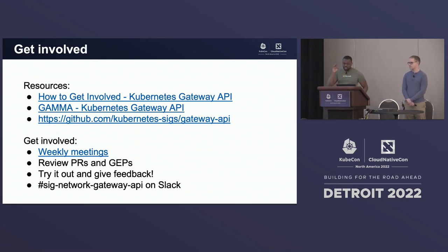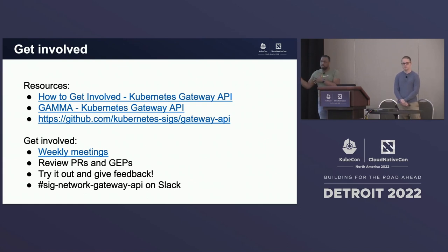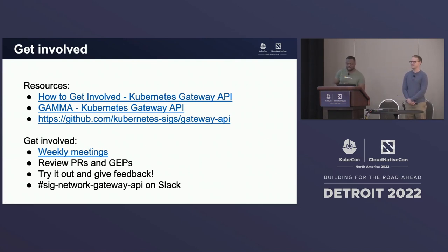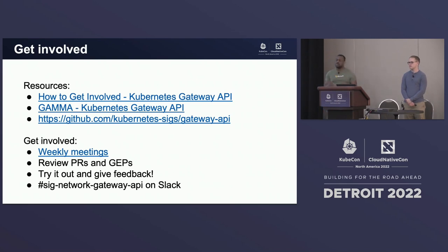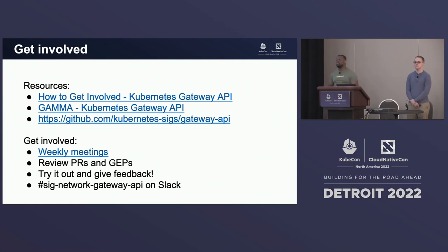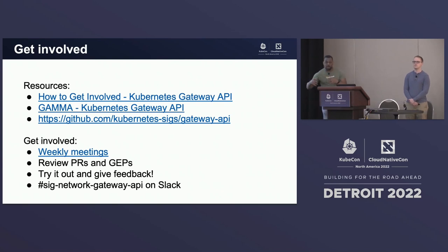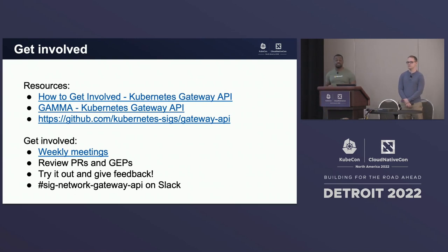How to get involved: there are several resources available. The Gateway API website has a whole page on how to start contributing to the specification, including a GAMMA page with links to our calendar and meeting notes. Our issues are filed under the Gateway API repo under Kubernetes SIGs. A big thanks to Shane, who created a milestone to track our gamma mesh work. Many implementations have already planned to implement as soon as the milestone is complete.